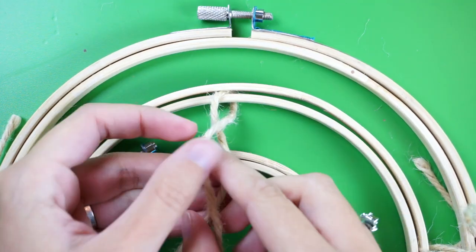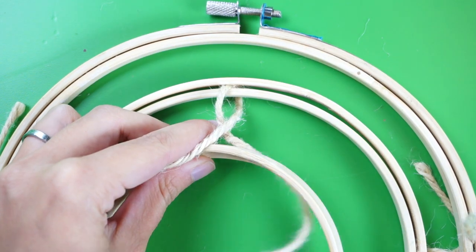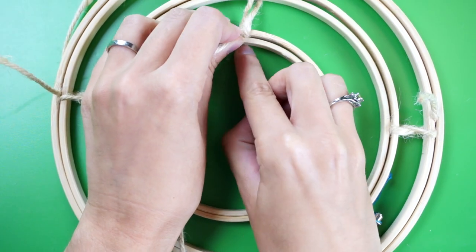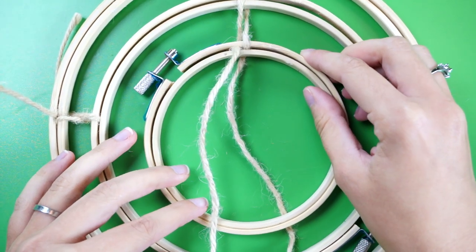Then twist to make your X and thread the ends onto the smallest hoop this time, one from the bottom up and one from the top down, just like we did before. Tighten and adjust this part so the smallest hoop hangs correctly, because it will be tough to fix this part later.